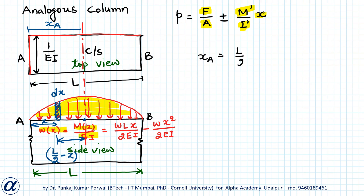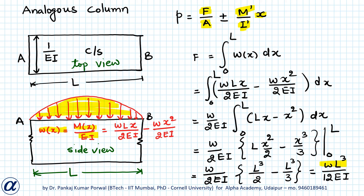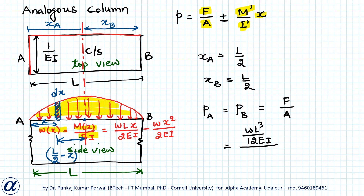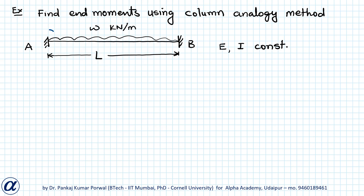Since M' = 0, both xA and xB equal L/2, so PA and PB are both equal to F/A. This gives (wL³/12EI) ÷ (L/EI) = wL²/12. Therefore the n moments Mab and Mba are equal and both equal wL²/12.